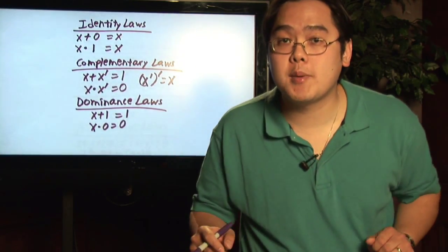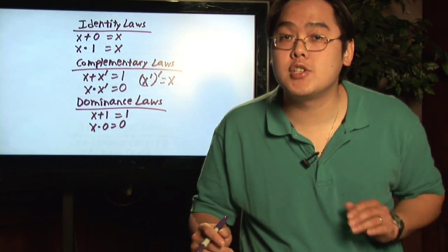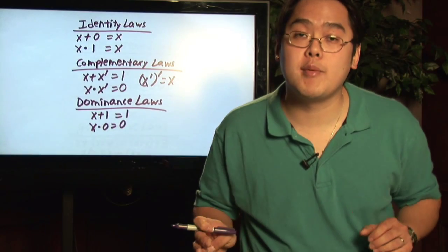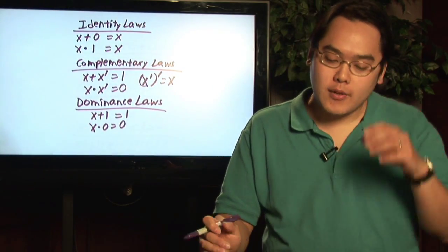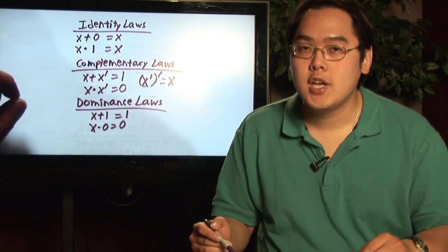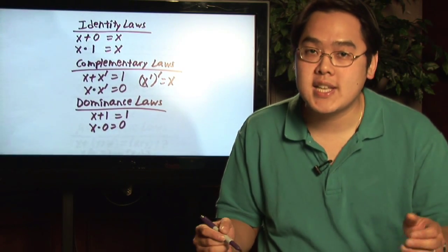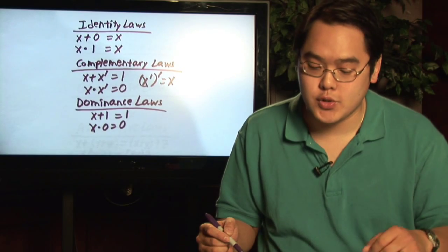So for the next couple of minutes, we're just going to go over those laws and just be sure that you know them. And then you'll be able to use these laws to simplify Boolean functions. Now, first we have the identity laws. The identity laws are pretty straightforward in that you have X plus zero equals X, X times one is equal to X.